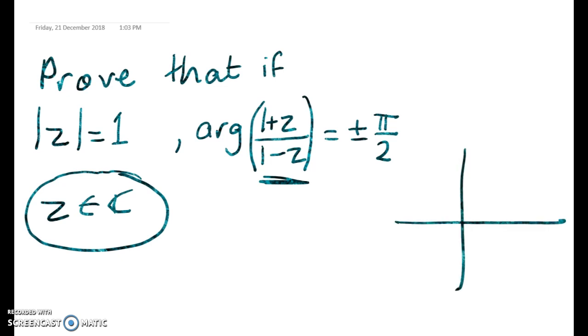What it means is that if we take a complex number that's on the unit circle, then once we manipulate it as follows, we add 1 to it and then divide it by 1 minus the number, then we end up sitting on this axis up here, so the argument being positive π/2, or this axis down here, which is negative π/2.